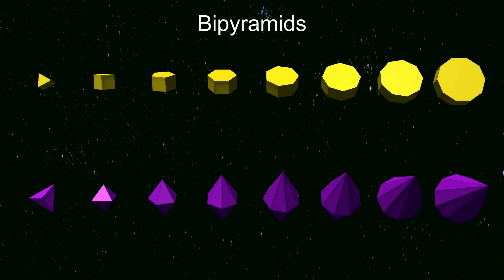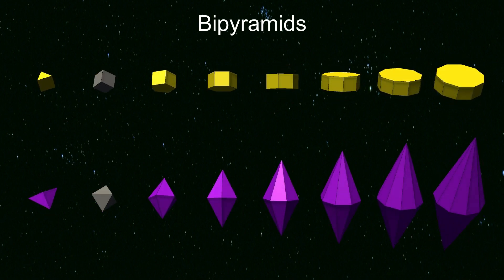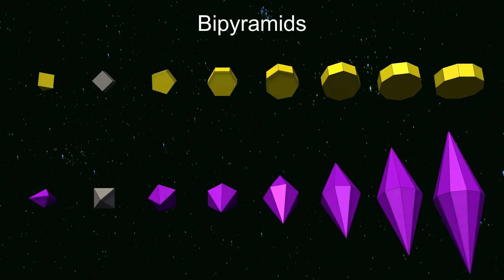The square bipyramid is in fact an octahedron, because the square prism is a cube, so it's not usually included in the family.